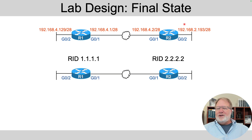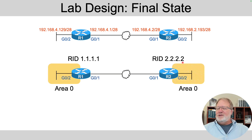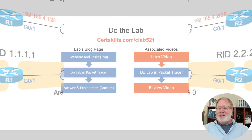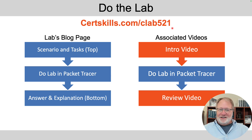All right, for the final state: router IDs are 1.1.1.1 and 2.2.2.2, with all subnets in area 0. There's your design — you can go forth and do the lab. There again is the direct link to the lab. Have fun!